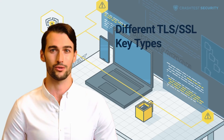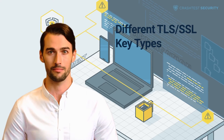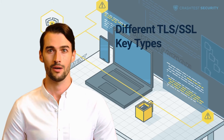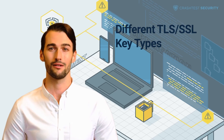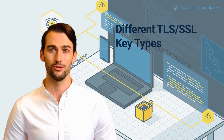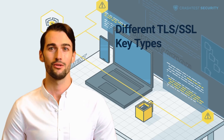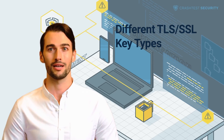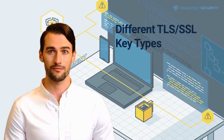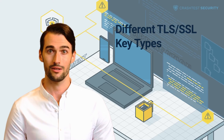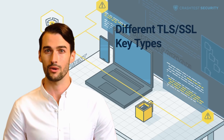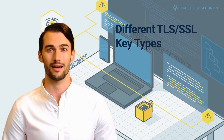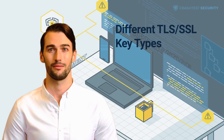The RSA key type, also referred to as a public key cryptosystem, is more prevalent for securing data transmission. The certificate authorities have set the industry standard of at least 2048 bits in size. It was invented in 1977 by Ron Rivest, Adi Shamir, and Leonard Adleman.